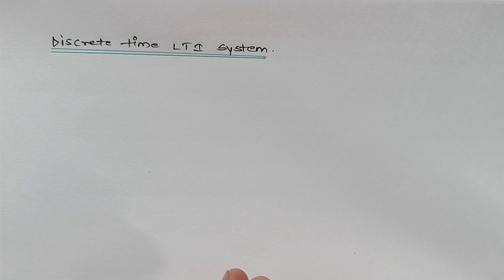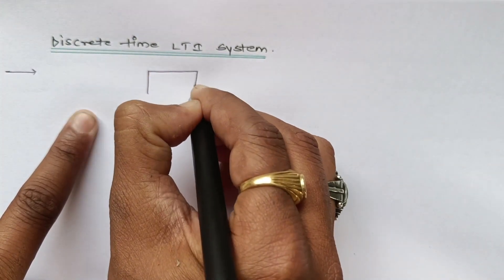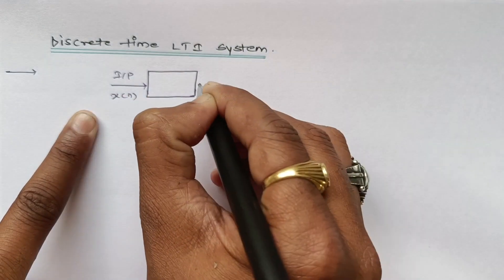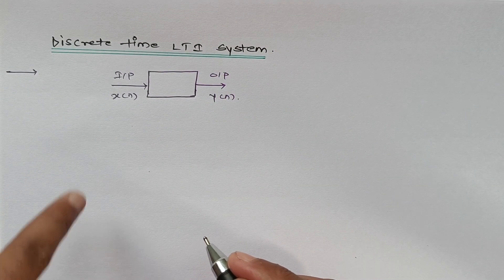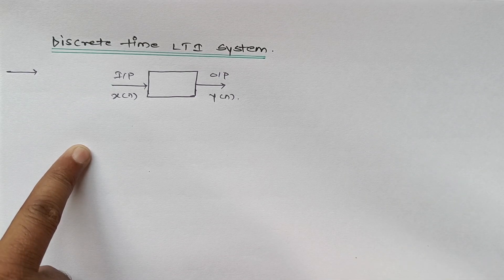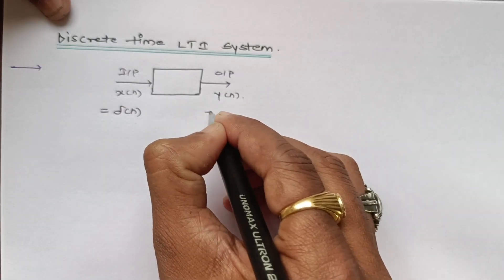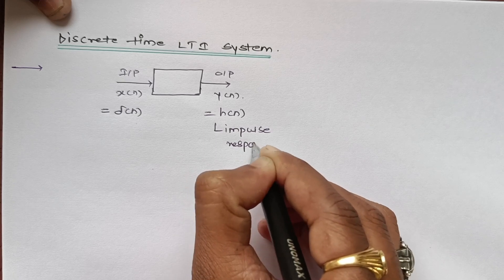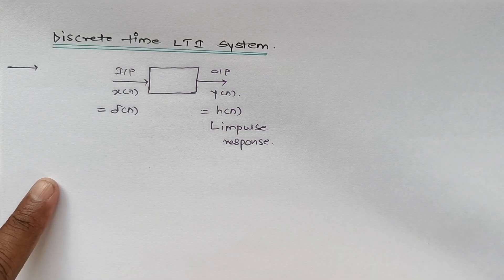In this video we will see discrete time LTI systems and their output expression. For a discrete time LTI system, the input and output both will be in discrete form. If we consider the input as x of n, the output will be y of n. As we have discussed, for every LTI system the most important point is its impulse response, and if the input signal is del of n, then y of n will be h of n — the impulse response of the system.